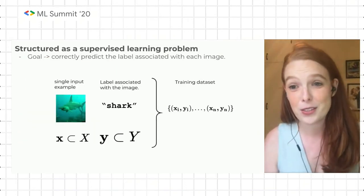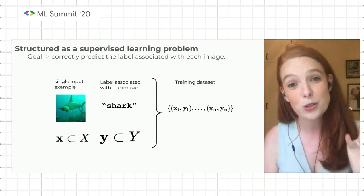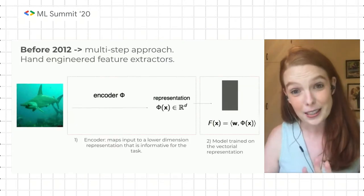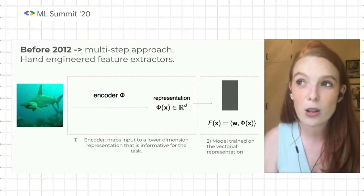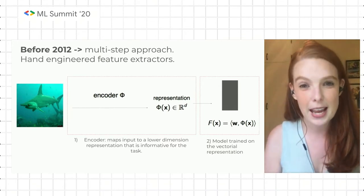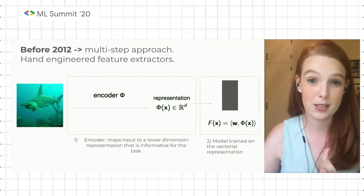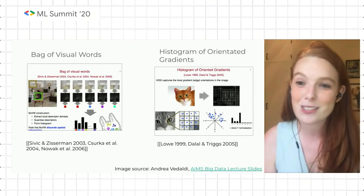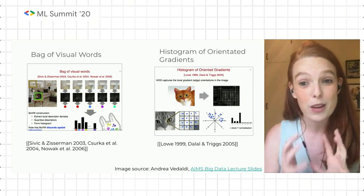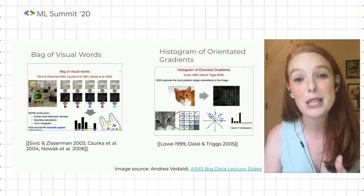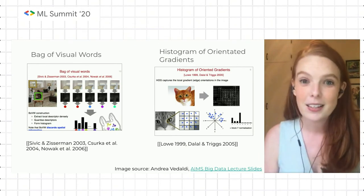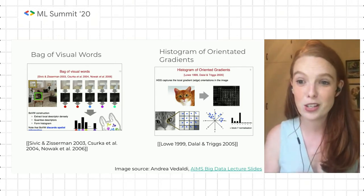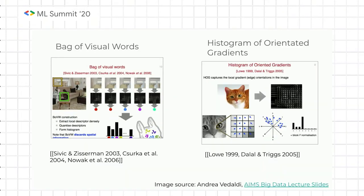This is often structured as a supervised learning problem. You often have your single image input and your goal is to predict the label associated with the image. Initially, before 2012, a lot of the research was on how do we craft hand-engineered features that we can extract from images to help in the classification. Some examples of this are things like bag of words, histogram of oriented gradients. At the time these were really exciting breakthroughs, ways to extract more meaningful information from images. But critically, they didn't generalize well — very good for specific tasks, but hard to repurpose for the variety of images we have.